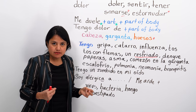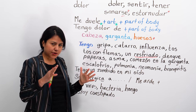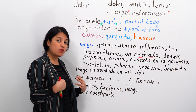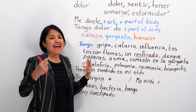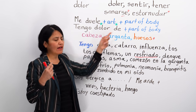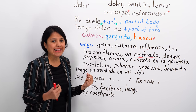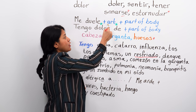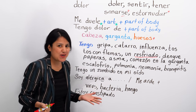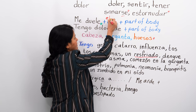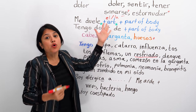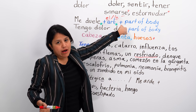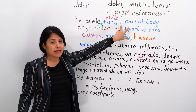To express your pain to the doctor, there are a couple of ways. You can say me duele — and this requires a definite article. In Spanish the definite articles are el, la, and their plural forms los and las. So you say me duele el or la, depending on whether the part of the body is feminine or masculine.